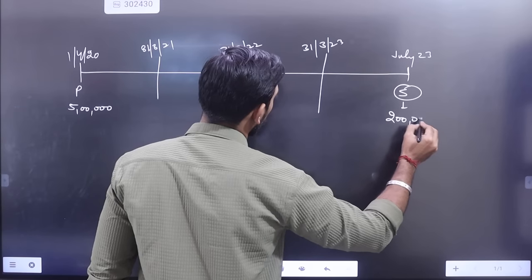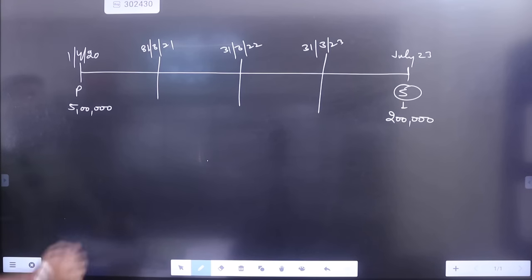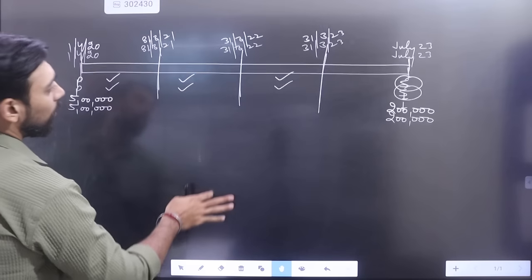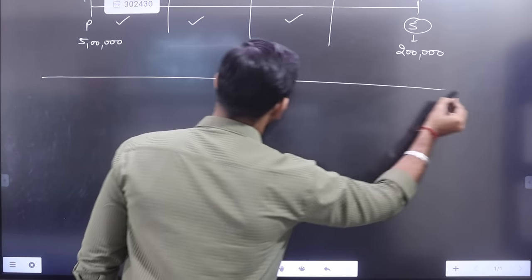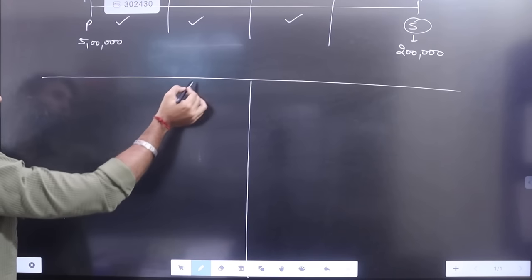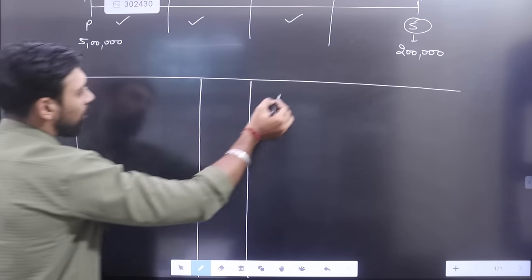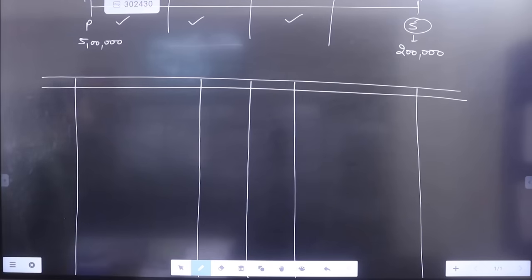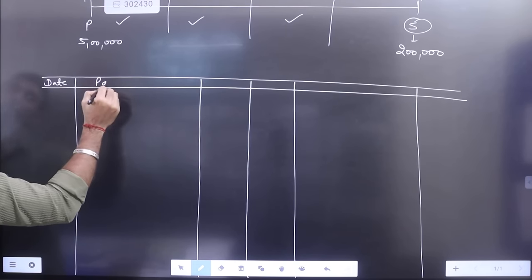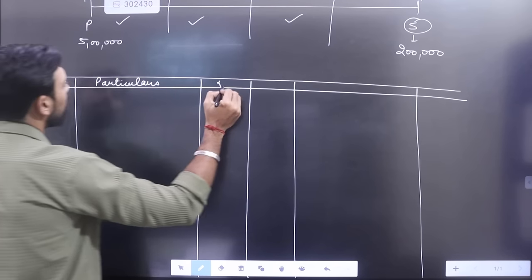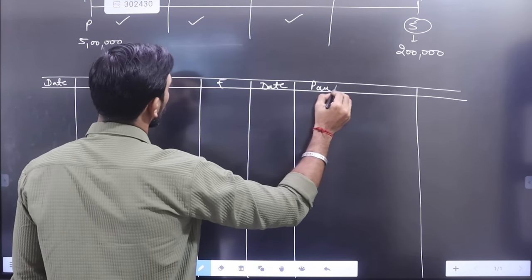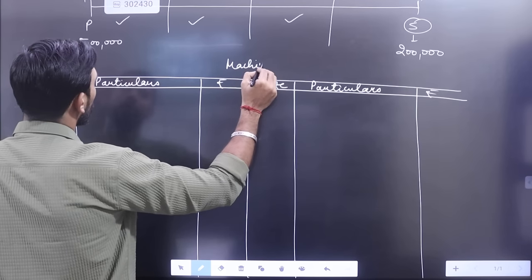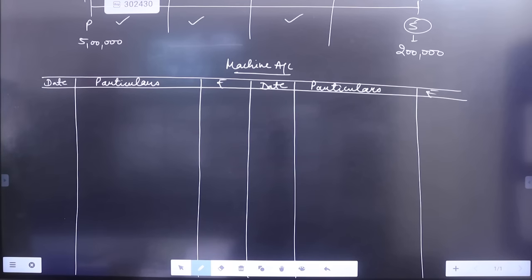Sale the machine - this is written in the question. This means 1, 2, 3, 4,00,000 and then the machine is sold. Okay, let's start. Let's make a machine account. Date, particulars, amount on both sides - this is our machine account ready.